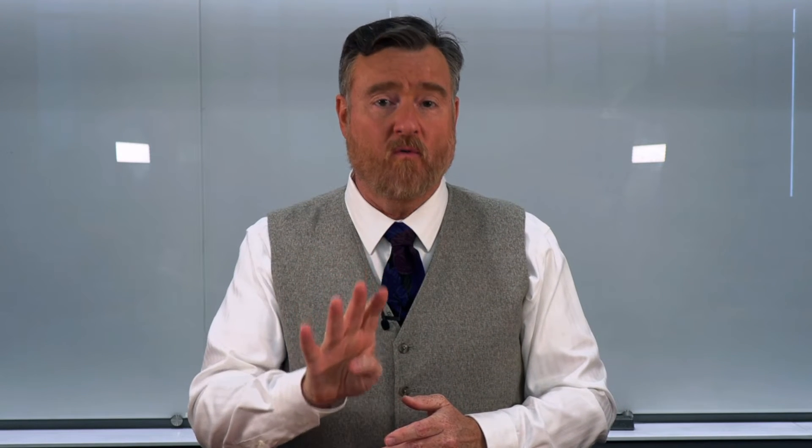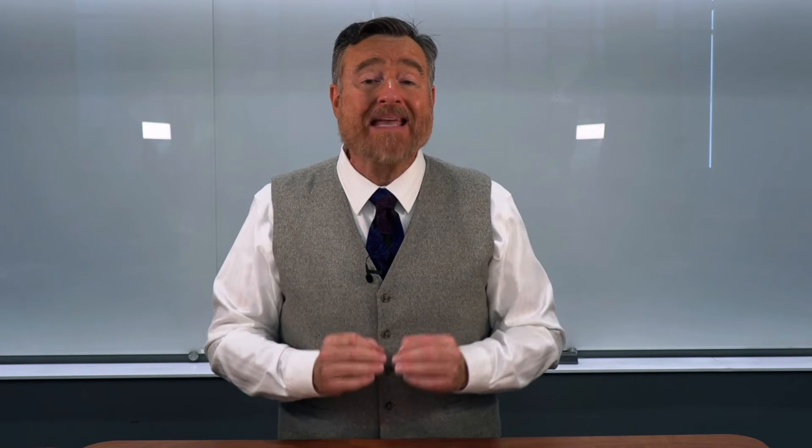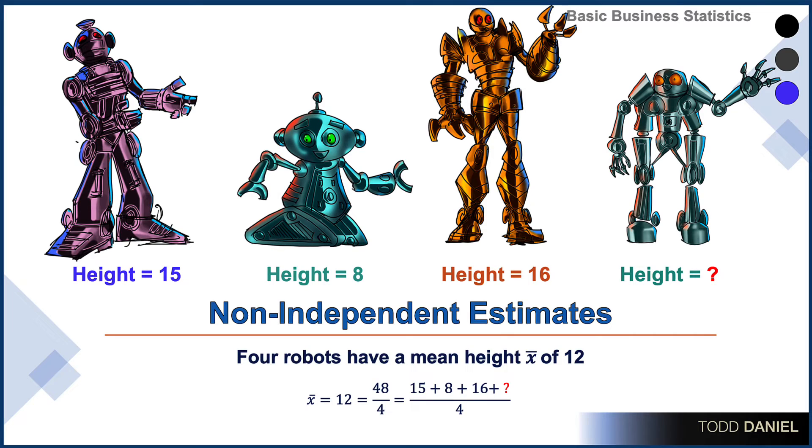And let me show you. This time we sample four robots and calculate their average height. Their mean is 12. There are four robots in this sample. What is the only number that we can divide by four to get 12? The sum total of their heights must be 48. And if we know the heights of three of these robots, 15 plus 8 plus 16 is 39. Therefore, we know that the height of that fourth robot must be 9. It is the only number that works in this equation. And furthermore, because you can know the height of the last robot, the fourth of the four, n minus 1 is not free to vary.